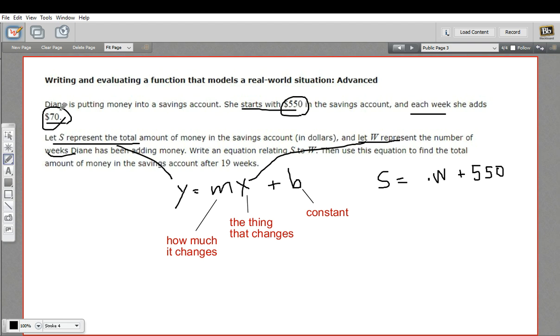What does change is that every week we put in $70. So if I multiply w by 70, that's going to represent that because if one week has gone by, you'd put in one for w, you'd have $70 added to your $550.